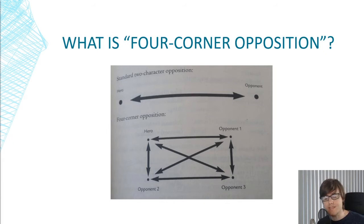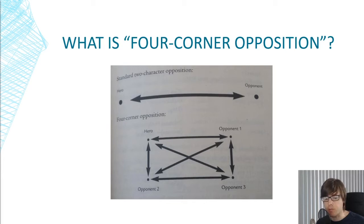Recall that an opponent is simply an antagonist — someone who opposes the protagonist in some way. This is an image from John Truby's book The Anatomy of Story, where we normally think of the opponent and the protagonist as just being opposed on a single line. John Truby suggests that we create an opposition that looks more like a box, where we've got opponents on each corner of the box, which creates this four-corner opposition.